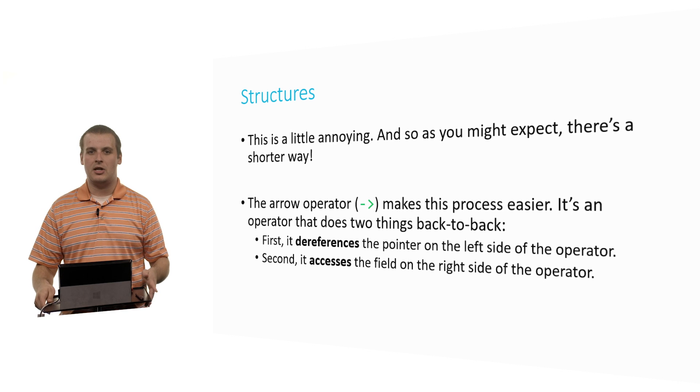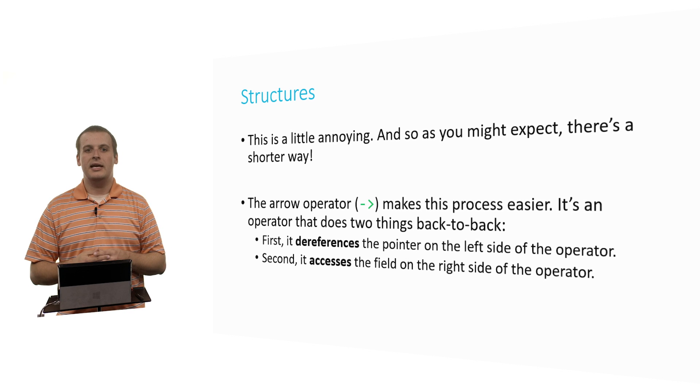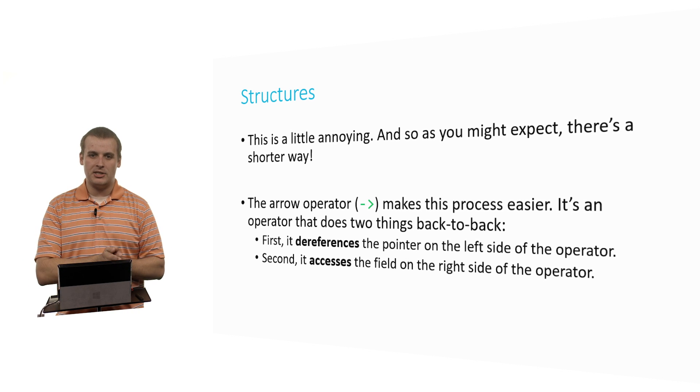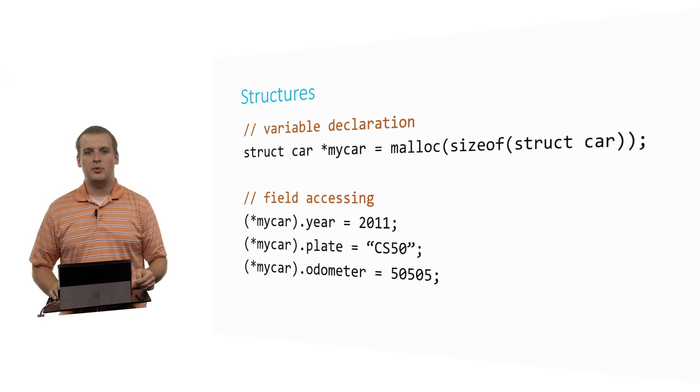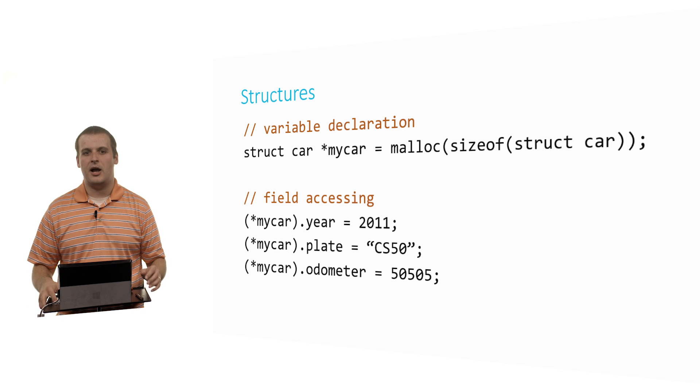That's kind of annoying though, right? There's a two-step process now. Now we have to dereference. We have a star operator and we have a dot operator. And as you might expect, because C programmers love shorter ways to do things, there is a shorter way to do this. There is another operator called arrow, which makes this process a lot easier. The way arrow works is it first dereferences the pointer on the left side of the operator. And then after having dereferenced the pointer on the left, it accesses the field on the right.